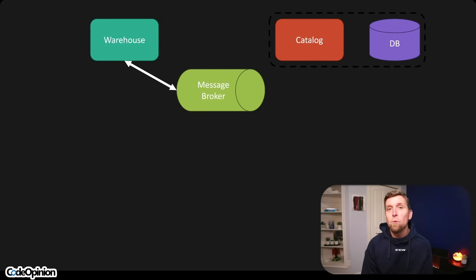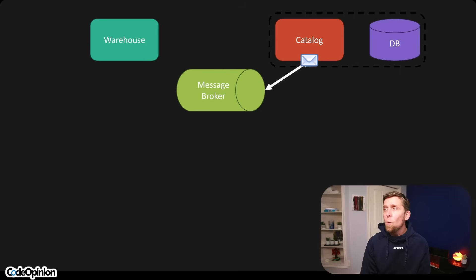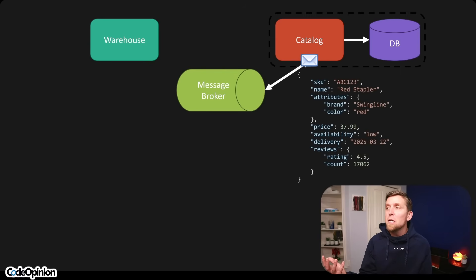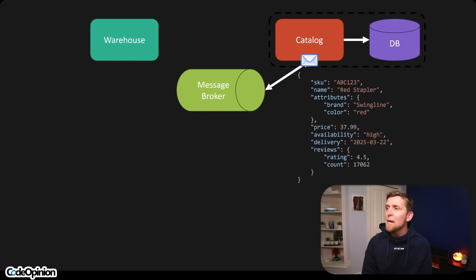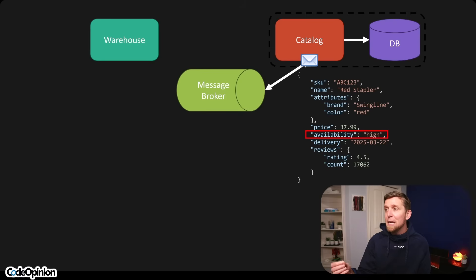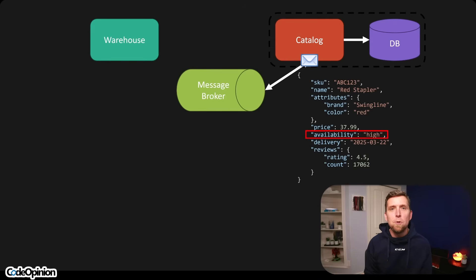Say we have a new product received in our warehouse for that stapler. We can publish an event to a topic on our message broker that product was received. Our catalog service can be a consumer listening for that event. It reaches out to its database — using a document store, say — which has data related to price, name, and availability from the warehouse. So based on the data in the event, it can determine: okay, we can now change availability to 'high', and in our UI we can say yes, we can ship that to you tomorrow.